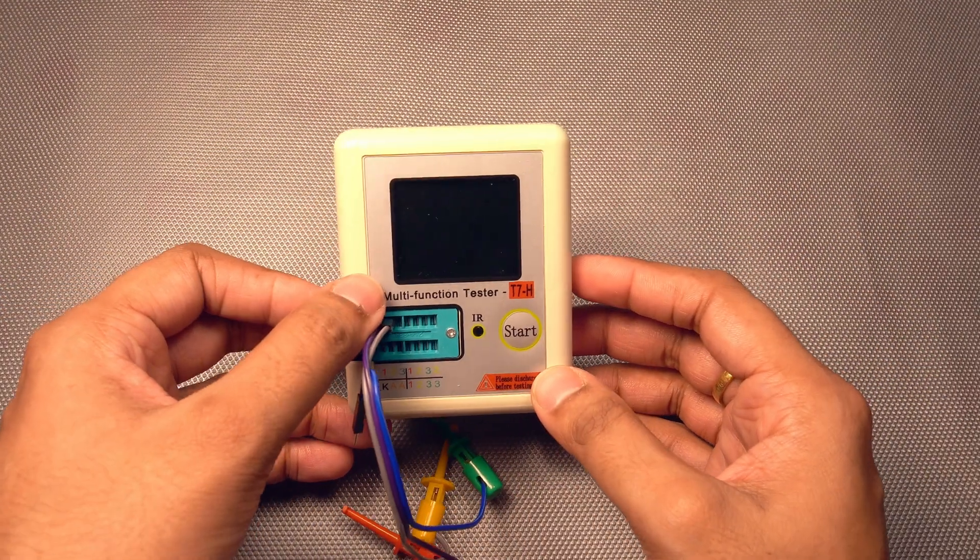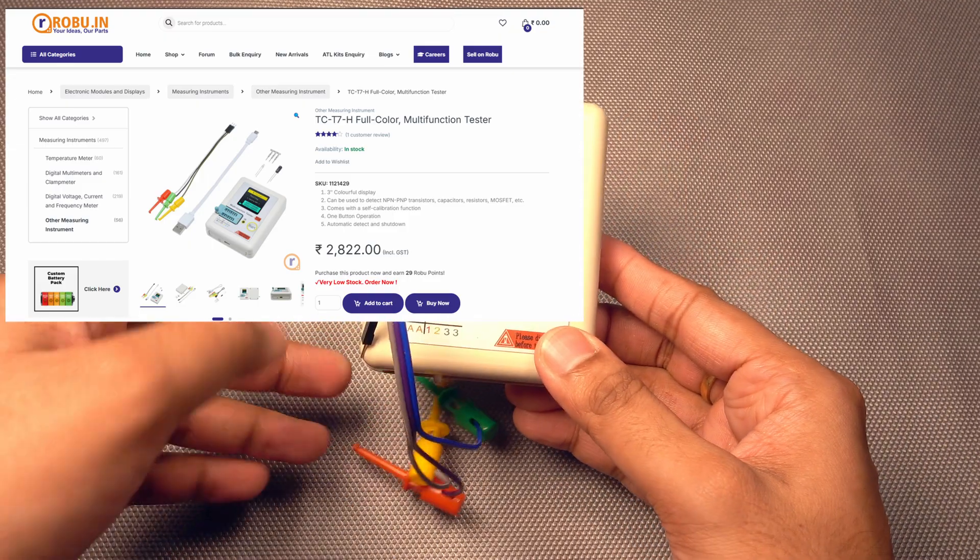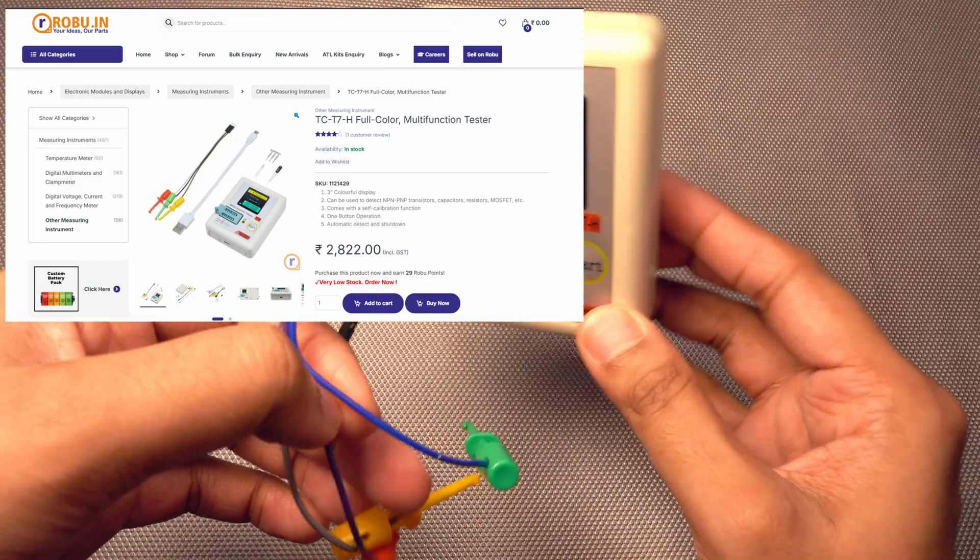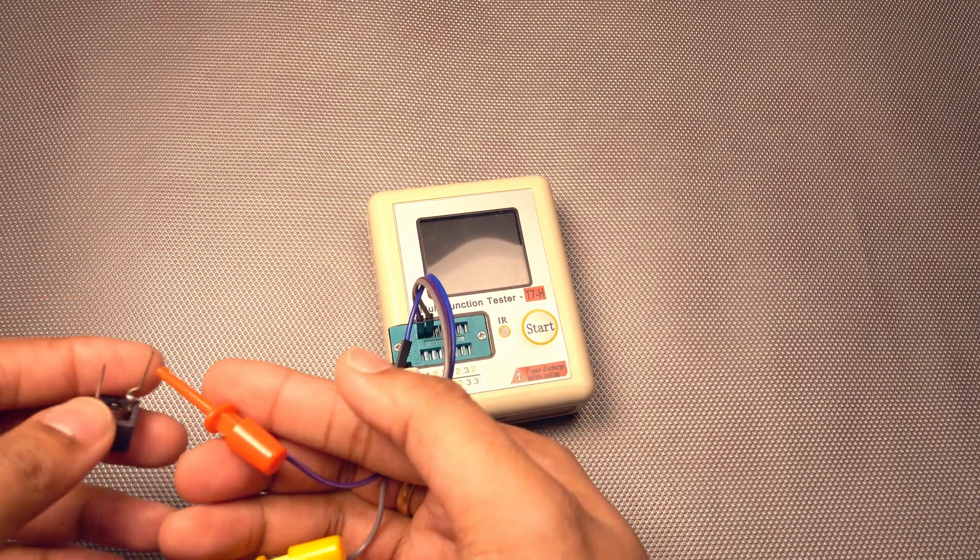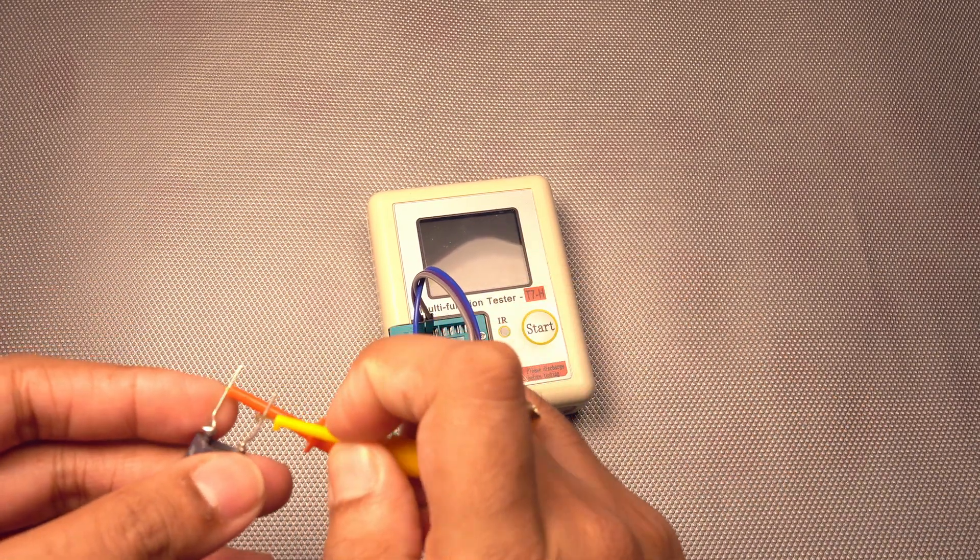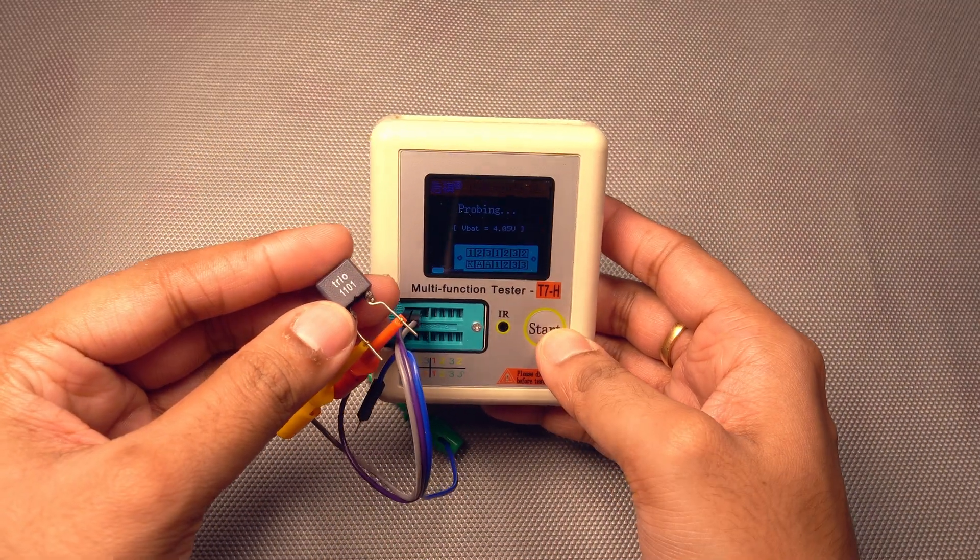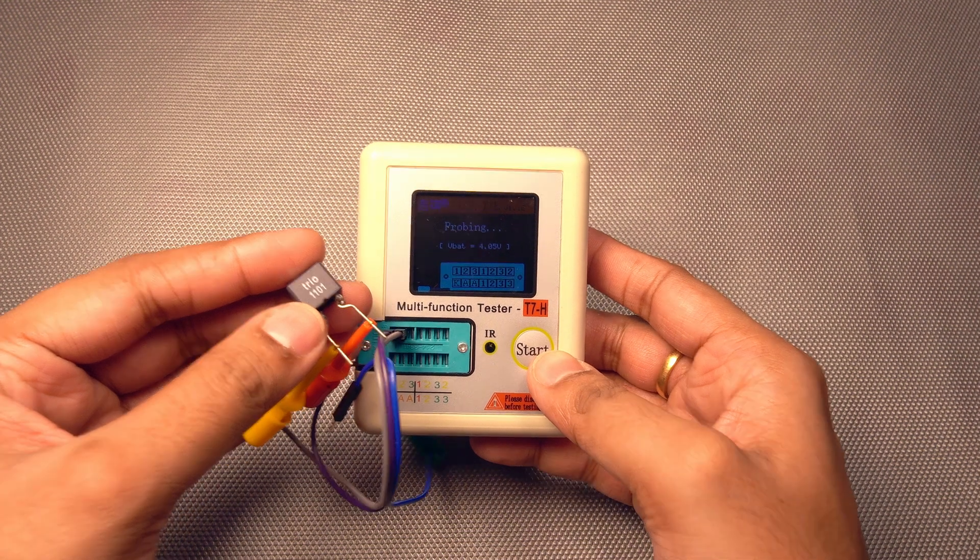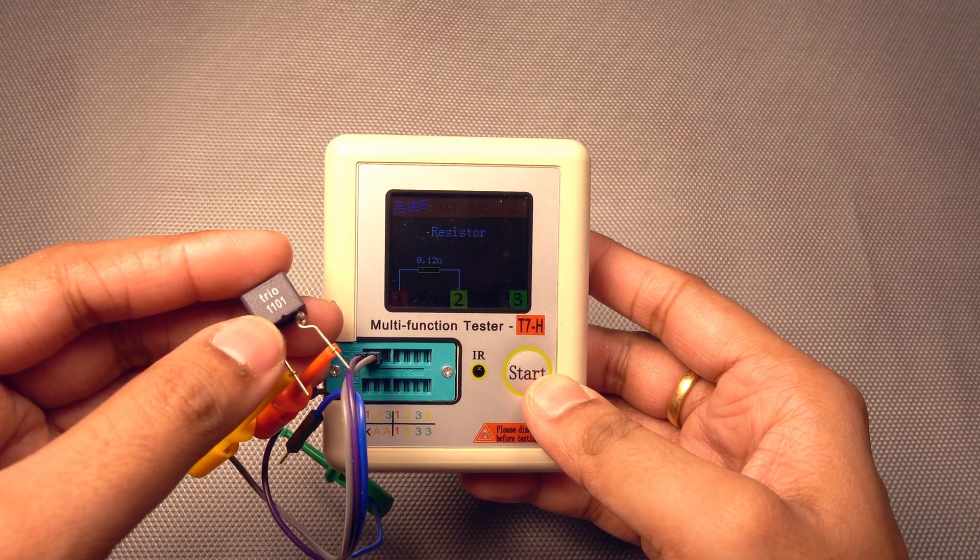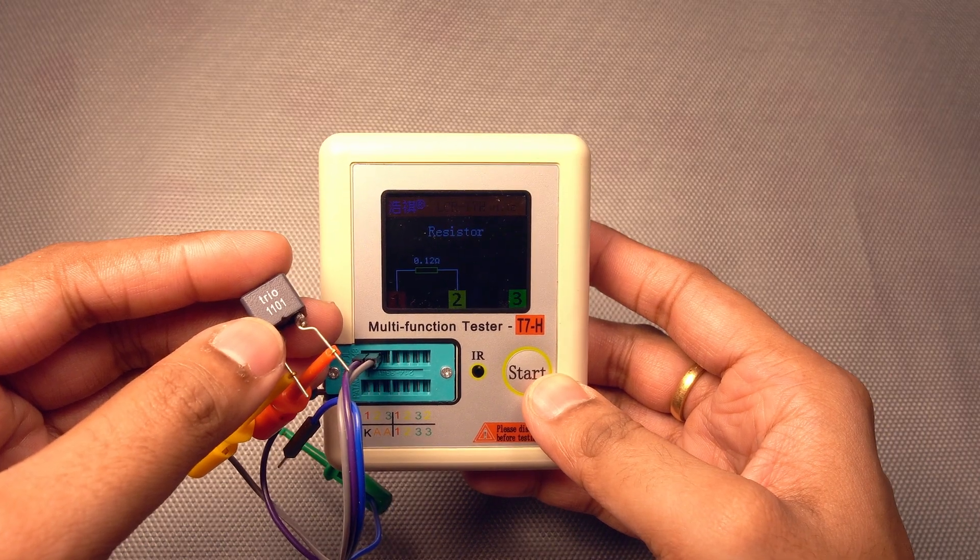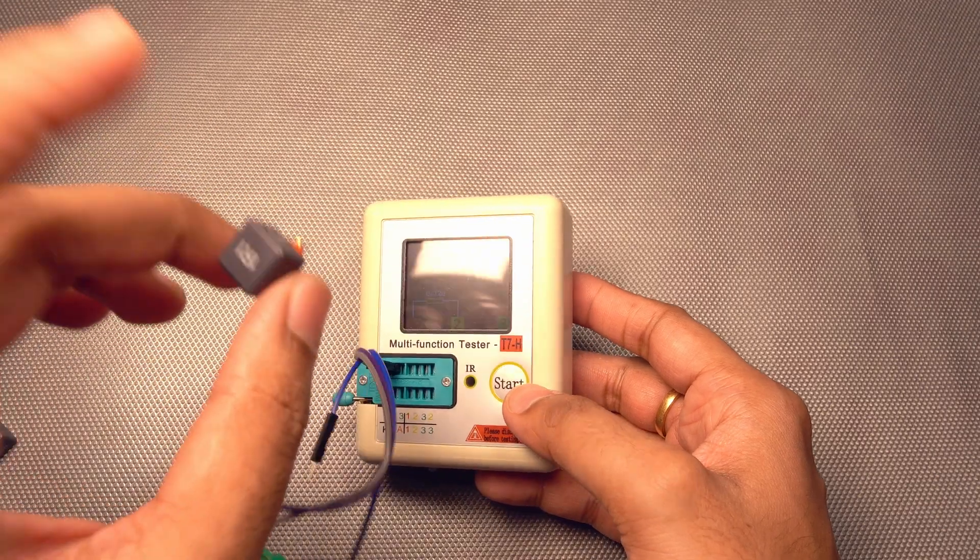And if you are having this multifunction testers, this is the T7H model, the updated model. There is no way this can measure this inductor values but still. So I connected the two leads and if I press start, okay, it detects this one as one resistor. So this is also not feasible for measuring this low,